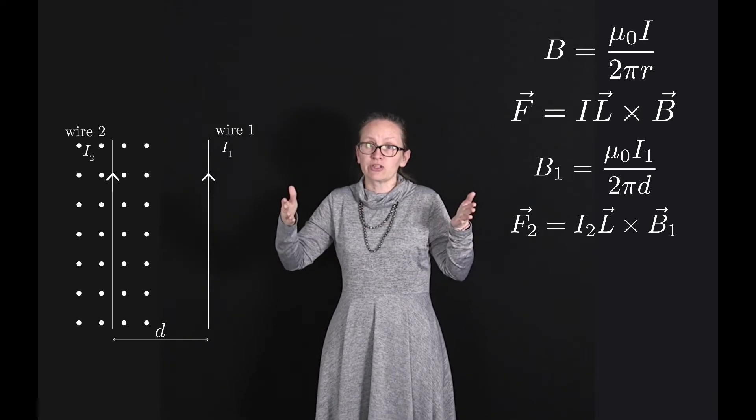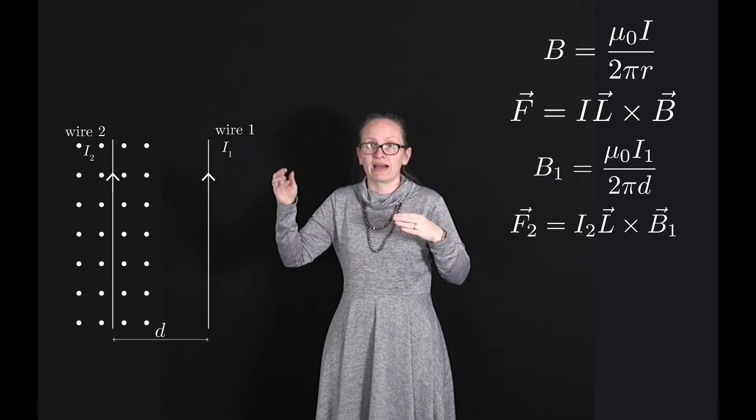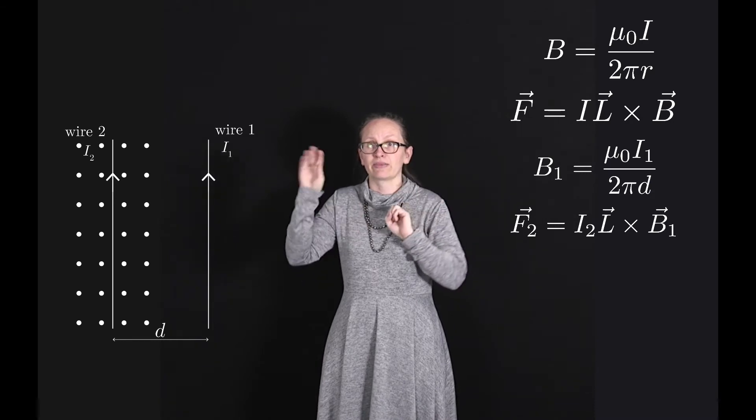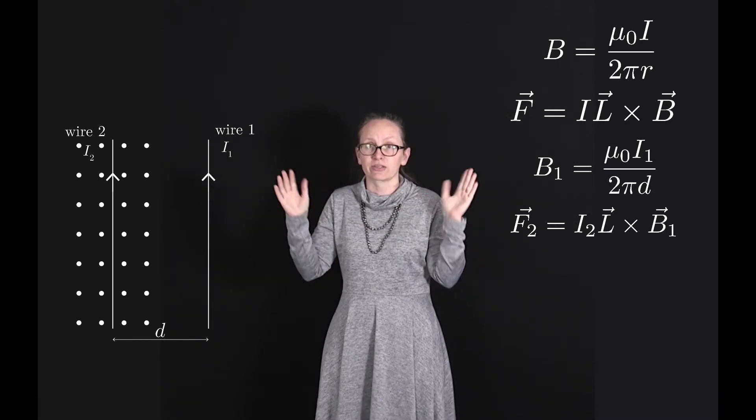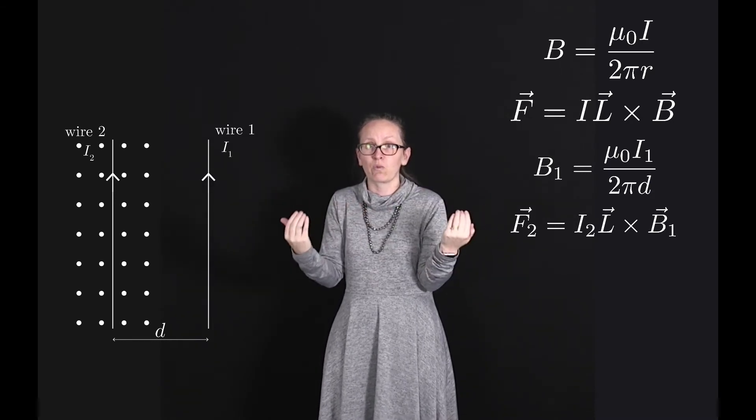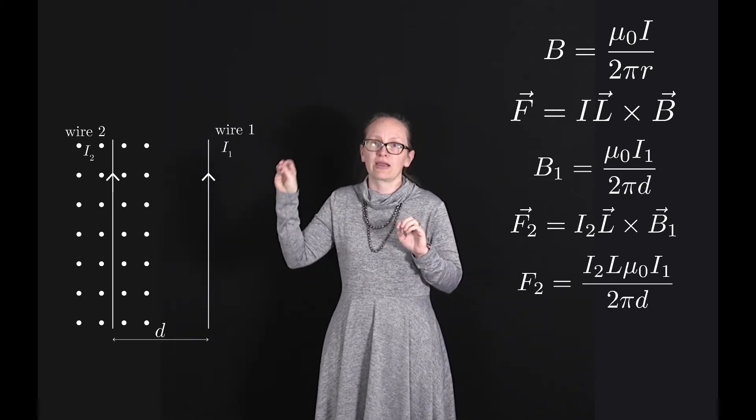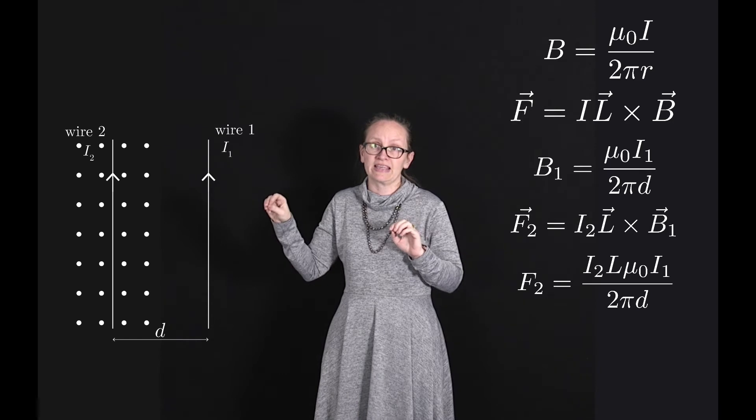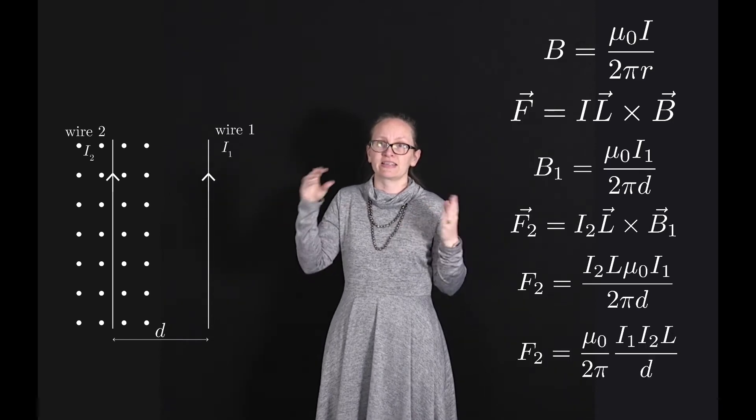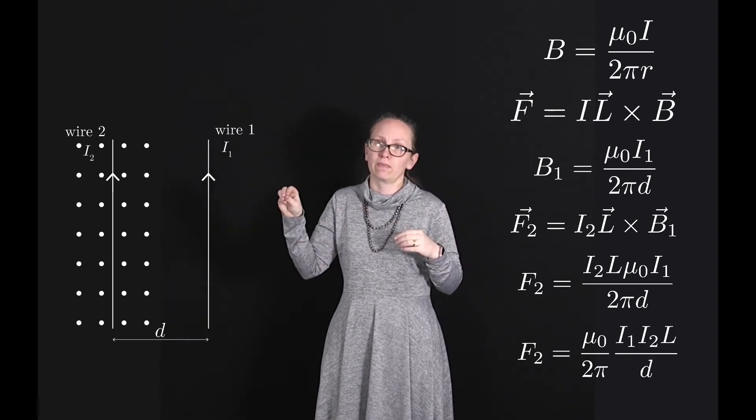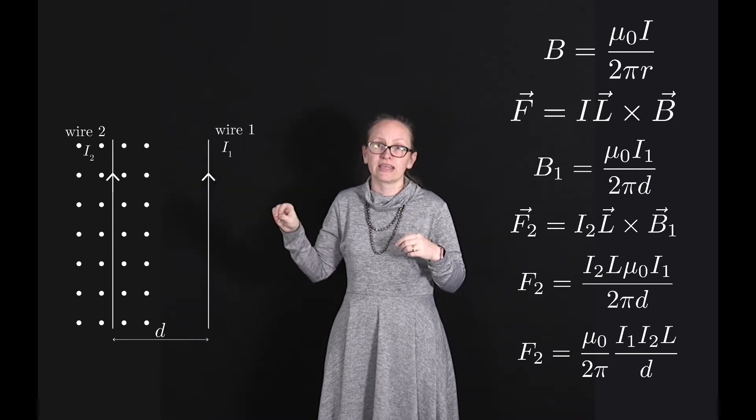Substituting in our expression for B₁ and realizing that L and B are perpendicular to each other, so when we take the cross product we get 1, this equals i₂L μ₀i₁ divided by 2πd, which we can write as μ₀ over 2π i₁i₂L over d.